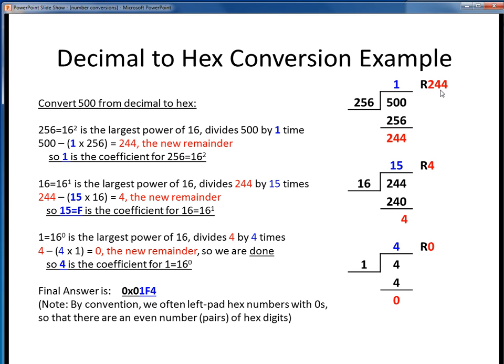We have to operate on the remainder. So we ask ourselves, what's the biggest power of 16 that will go into 244? Obviously 256 is too big, so the answer is 16. But then we ask ourselves, how many times will 16 go into 244? So if we perform that division, 16 goes into 244 fifteen times with a remainder of 4. So this 15 is the coefficient for the 16 to the 1 term.